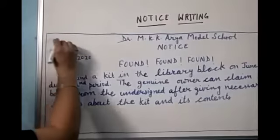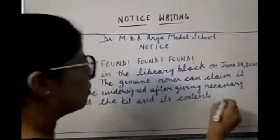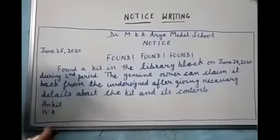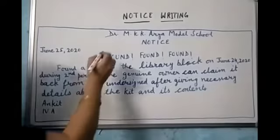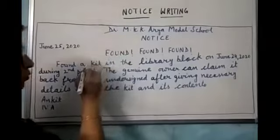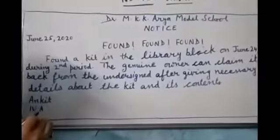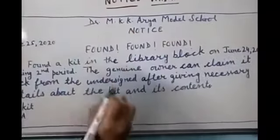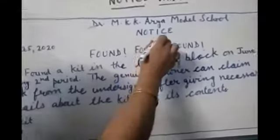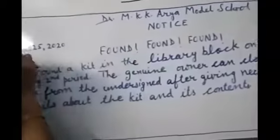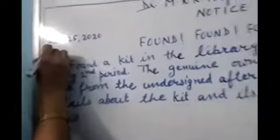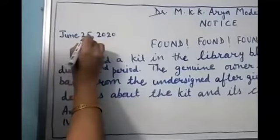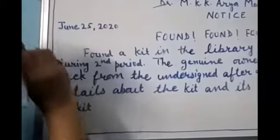First of all, you should make a 3-sided box — you can take the help of a scale. Then write the name of the school: Dr. M.K.K.R.A. Model School. Then write the word 'NOTICE'. Then write the date: June 25th, 2020 — first month, then date, then year.